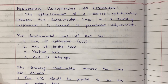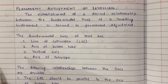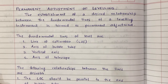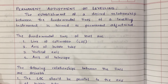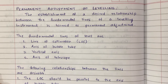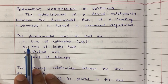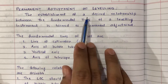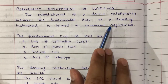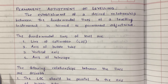Before starting the 2-peg test, we need to understand the permanent adjustment of leveling. We have already seen the temporary adjustment of leveling, in which there are three steps: first is the centering, second is the leveling, and third is the focusing — focusing of the eyepiece and focusing of the object glass. A permanent adjustment of leveling is also there, and in this, the establishment of a desired relationship between the fundamental lines of a leveling instrument is termed as permanent adjustment.